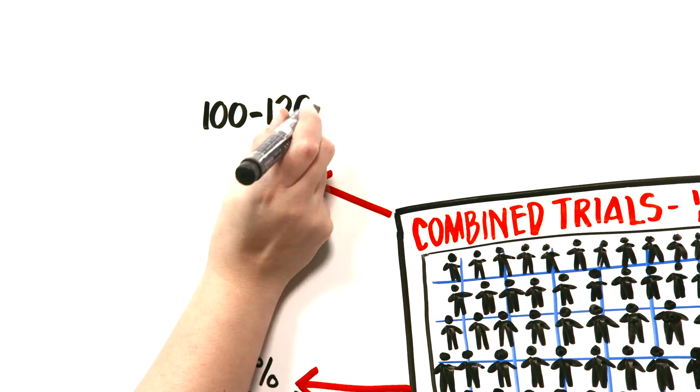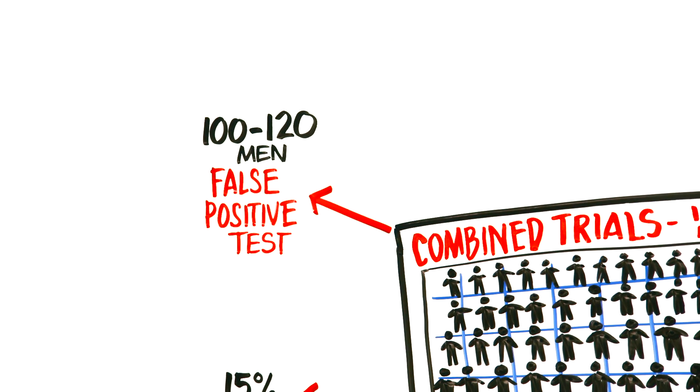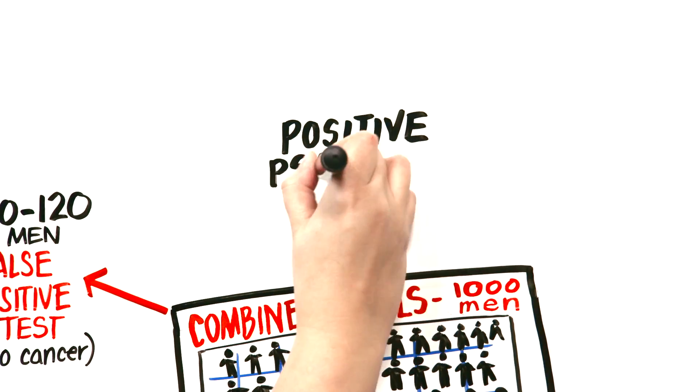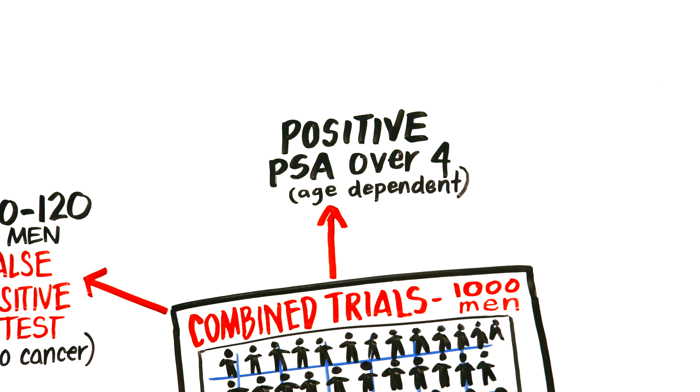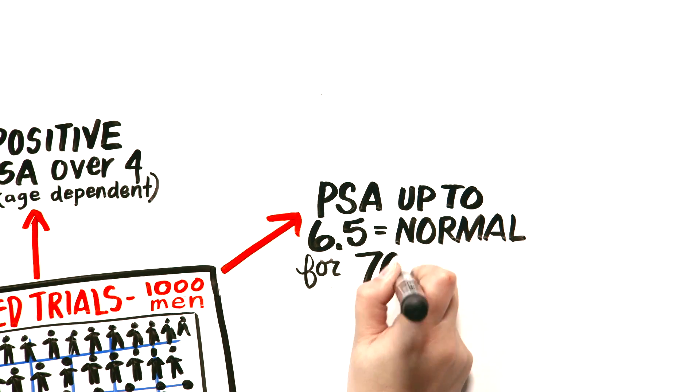100 to 120 men would have what we call a false positive test, where their PSA test would be elevated, but there would be no cancer. By positive, we typically mean a PSA over 4, but it can be age-dependent. So, for example, a PSA up to 6.5 might be normal for a 70 to 79-year-old.